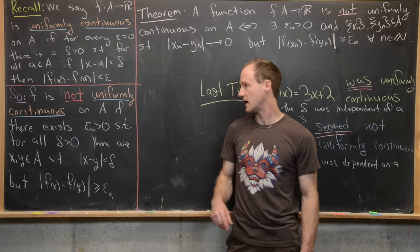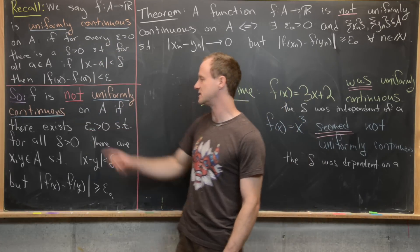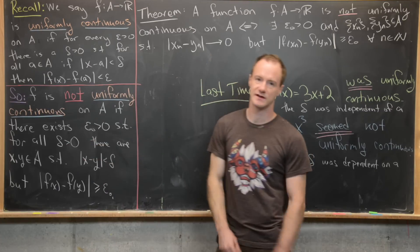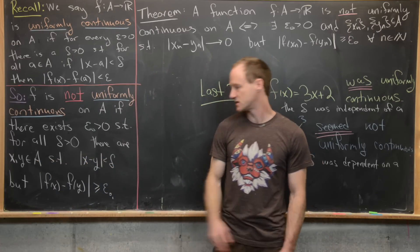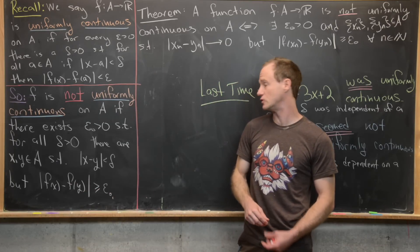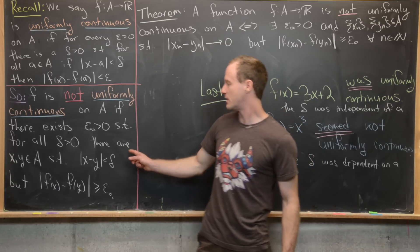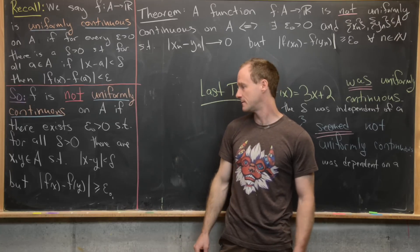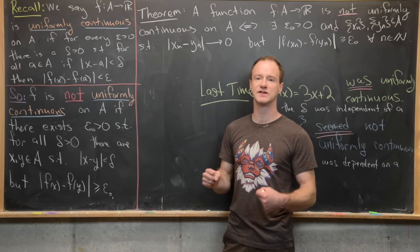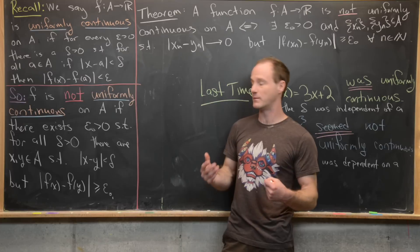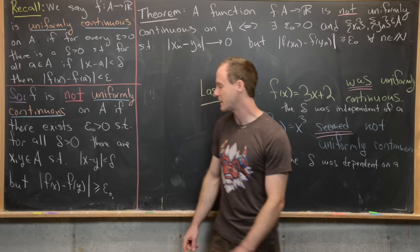So f is not uniformly continuous on A if there exists an epsilon-naught greater than zero such that for all delta greater than zero, there exist x and y in A such that |x − y| < delta but |f(x) − f(y)| ≥ epsilon-naught. The 'for all a in A' turned into 'there exist x and y in A', and the implication is negated into an 'and not', written as a 'but'.